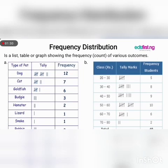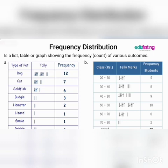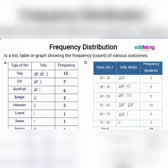Moving on, we are going to look at frequency distribution. A frequency distribution table is a table or graph showing the frequency — frequency means number of counts, that is the number of occurrences of a certain thing.